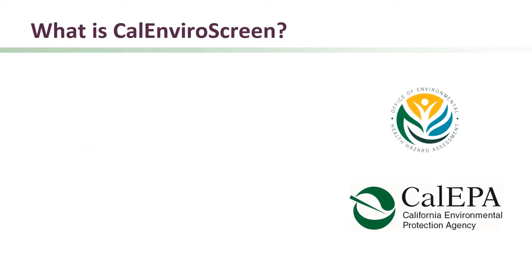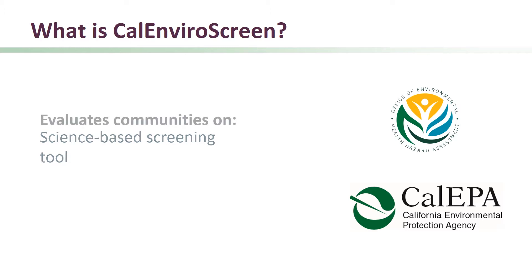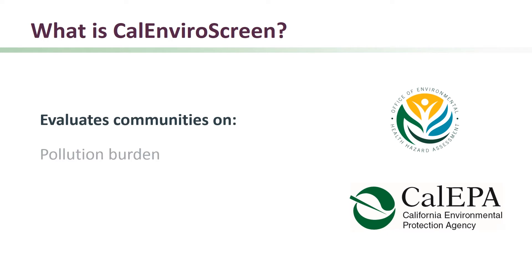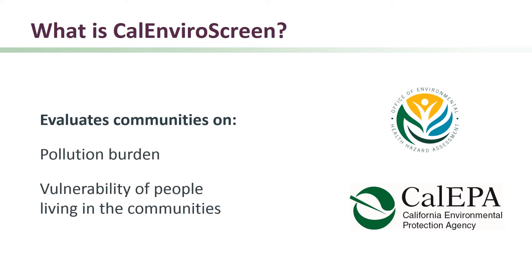CalEnviroScreen is a science-based screening tool developed by the Office of Environmental Health Hazard Assessment and the California Environmental Protection Agency. The tool is used to evaluate communities based on the pollution burden and the characteristics of the people living in these communities.